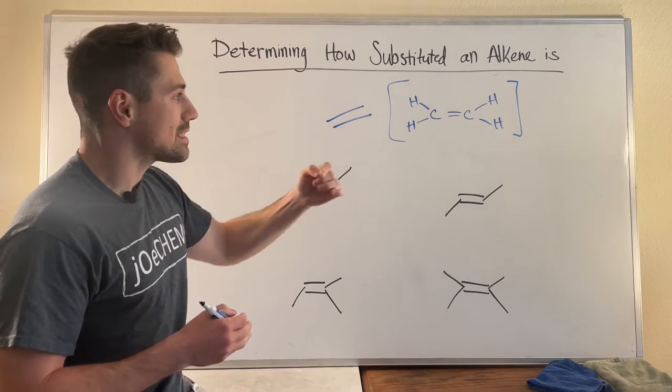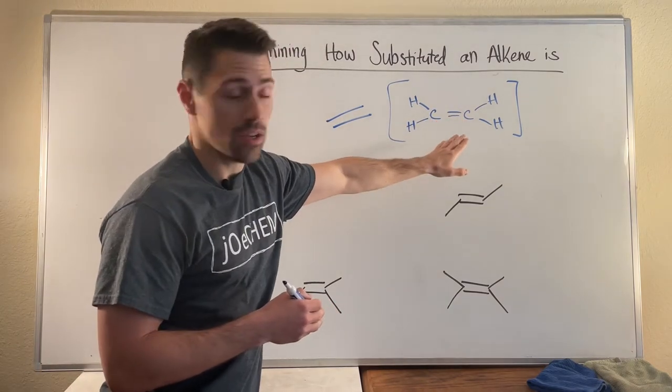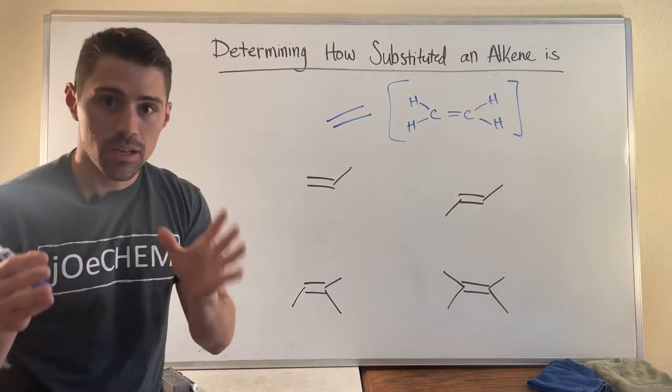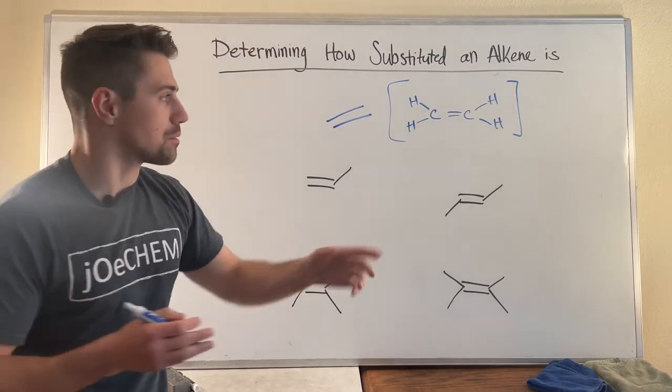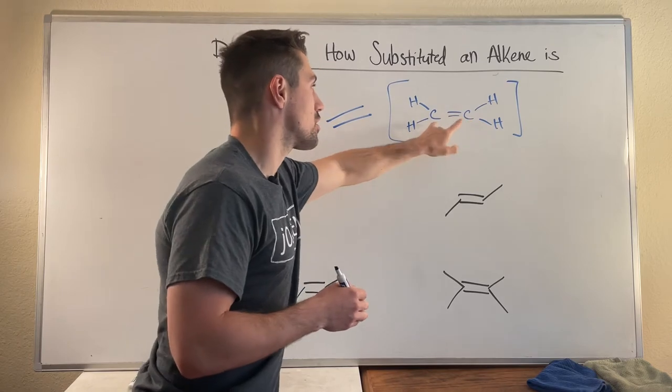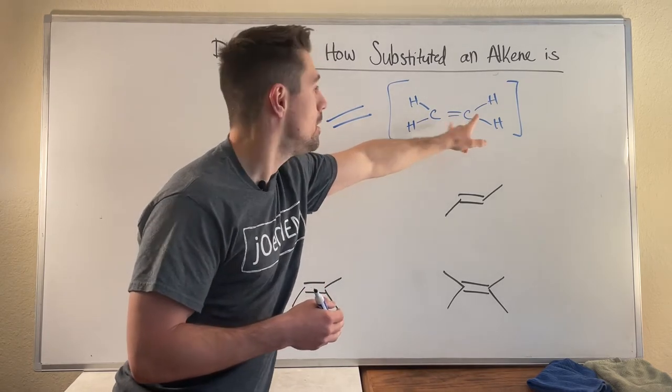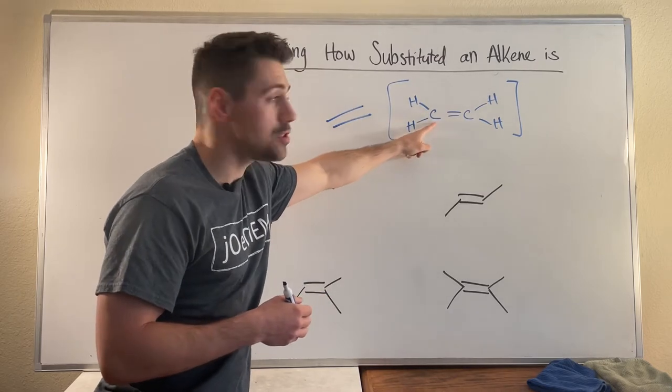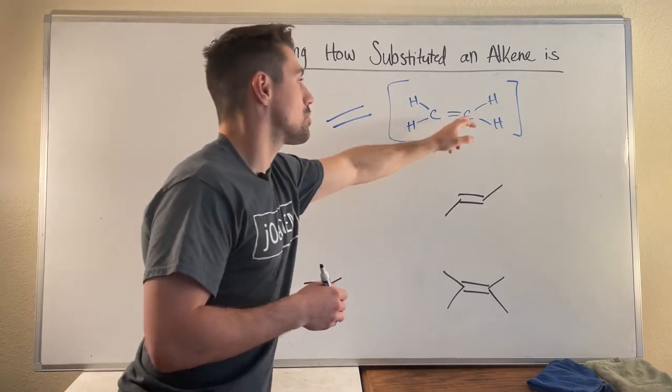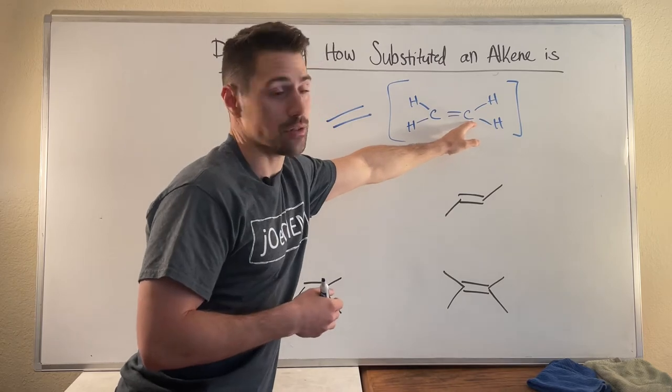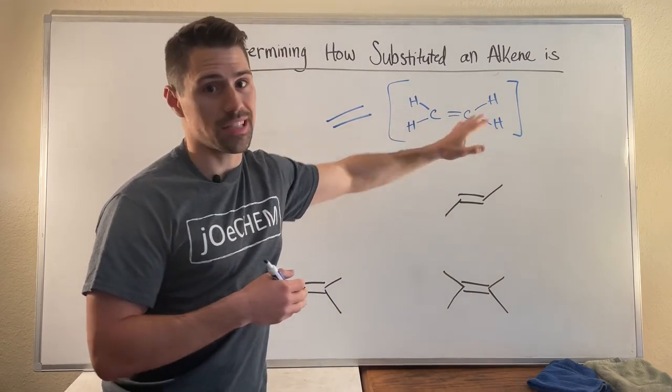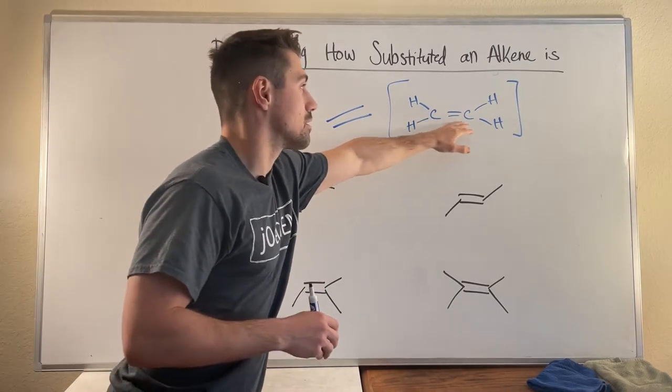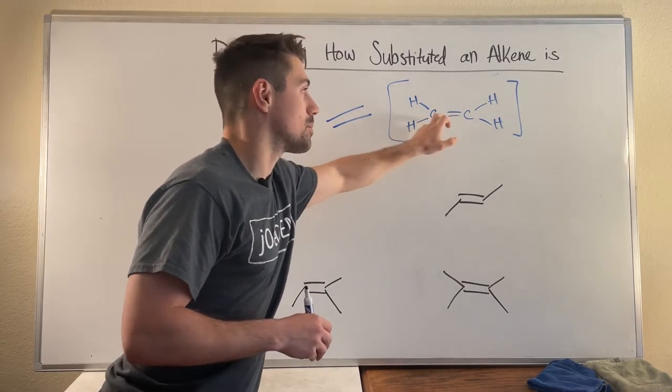So what you can see is in this structure when we talk about how substituted an alkene is, what we're asking is how many total carbons are the two carbons within the double bond attached to? I know that sounds weird and confusing but basically when you look at both sides of the double bond, the two carbons involved in the double bond, and you count up the total number of carbons this carbon's attached to and you add it to the total number of carbons that this carbon is attached to. So this thing is not substituted at all, right? This is almost like your methyl equivalent here, meaning that zero carbons are off of the carbons in the double bond.